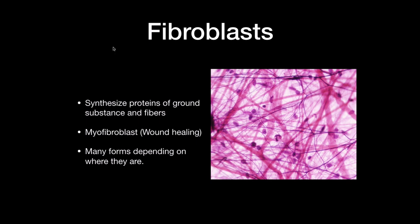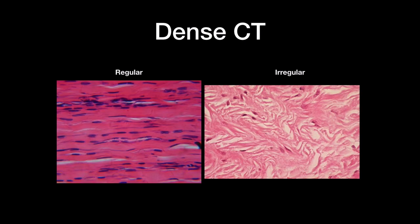In dense connective tissue, fibroblasts are elongated and pressed against the adjacent fibers. Dense connective tissue can be regular or irregular. In regular dense connective tissue, fibers run alongside each other and look organized — you find these in tendons, for example. In irregular dense connective tissue, fibers run in all directions, and these are mostly found in the deep layer of the dermis.